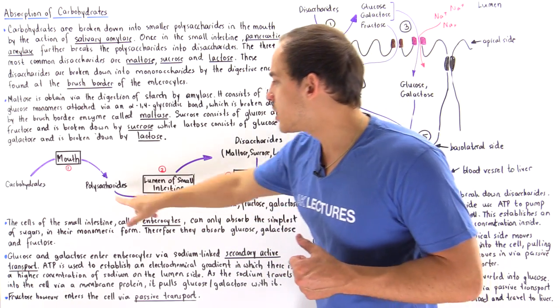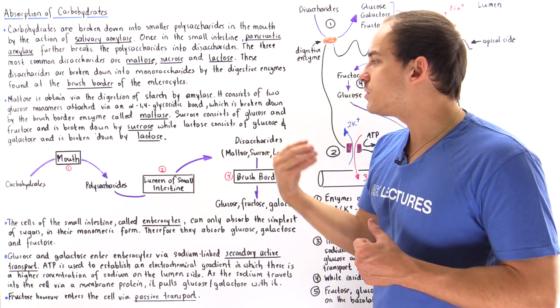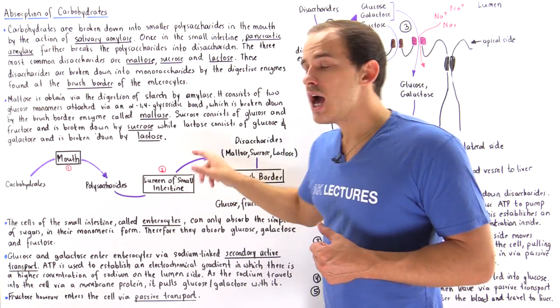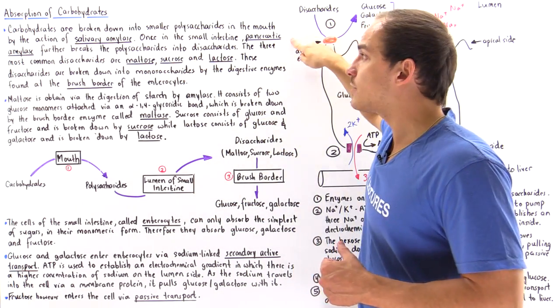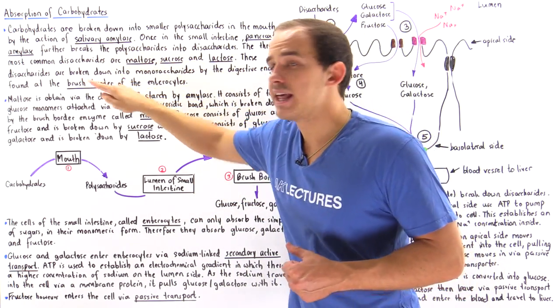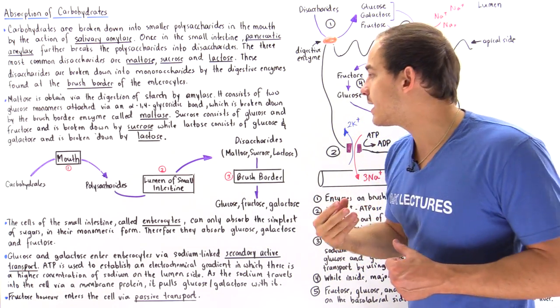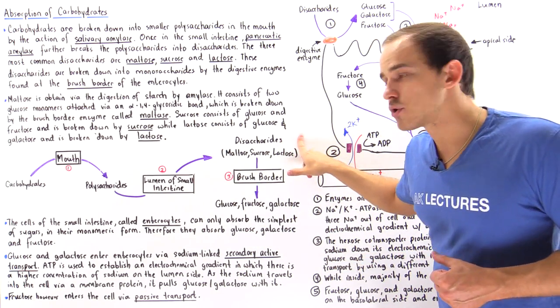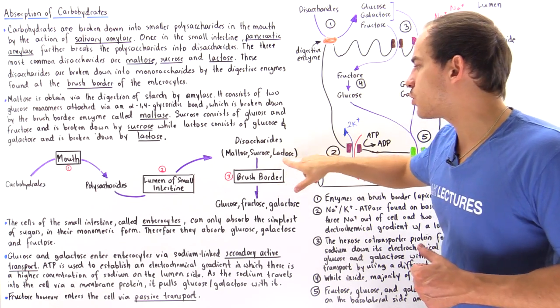These polysaccharides ultimately end up in the lumen of the small intestine, where pancreatic amylase breaks down the polysaccharides into disaccharides — our maltose, sucrose, and lactose.